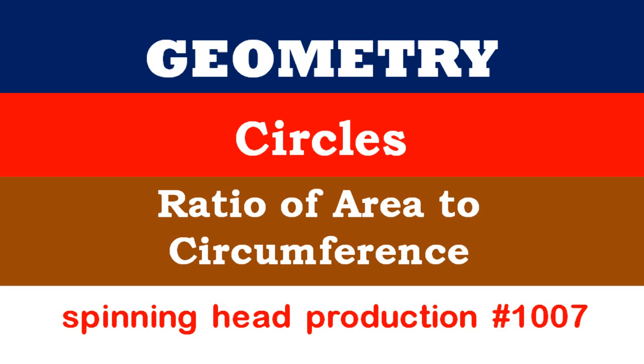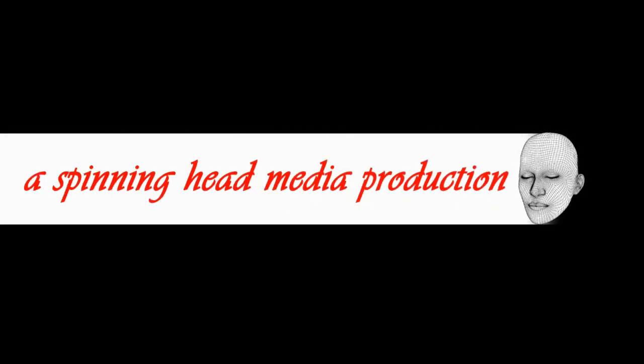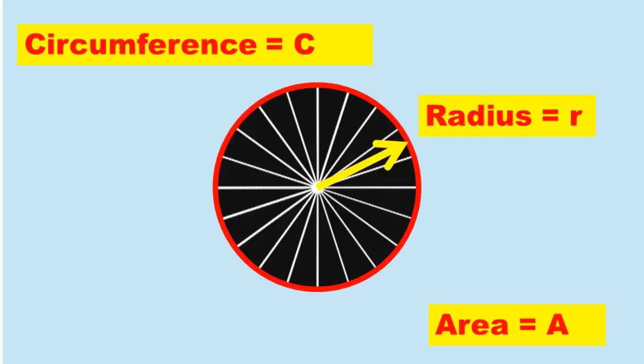In this lesson, we will look at the relationship of the area of a circle to its circumference. We will start with the circle having a radius R, a circumference C, and an area of A.